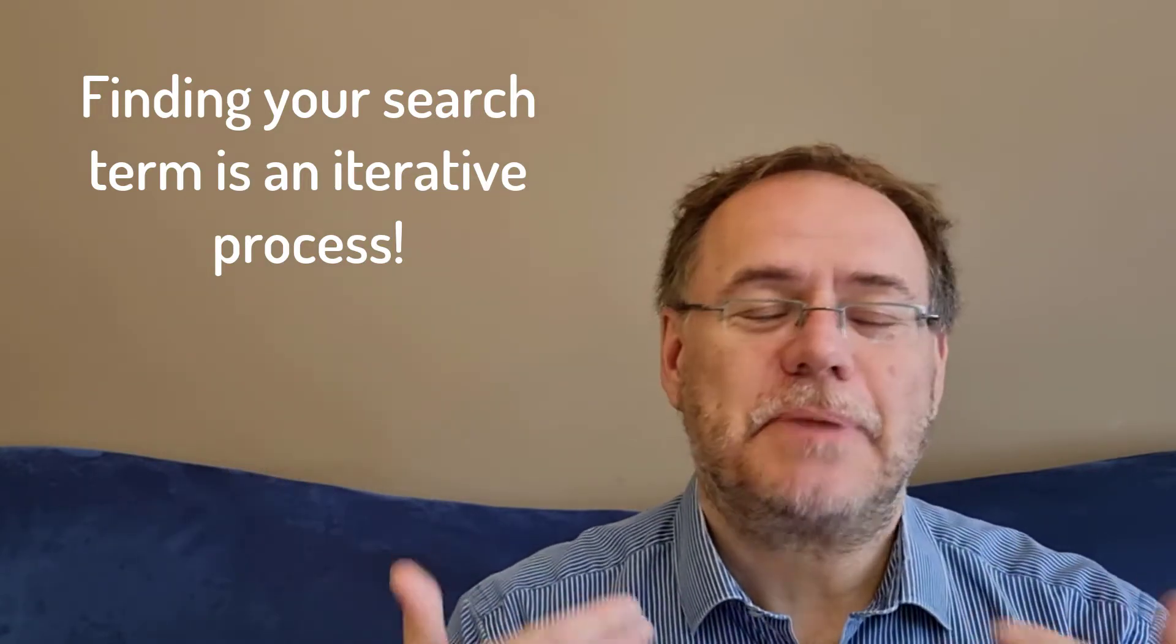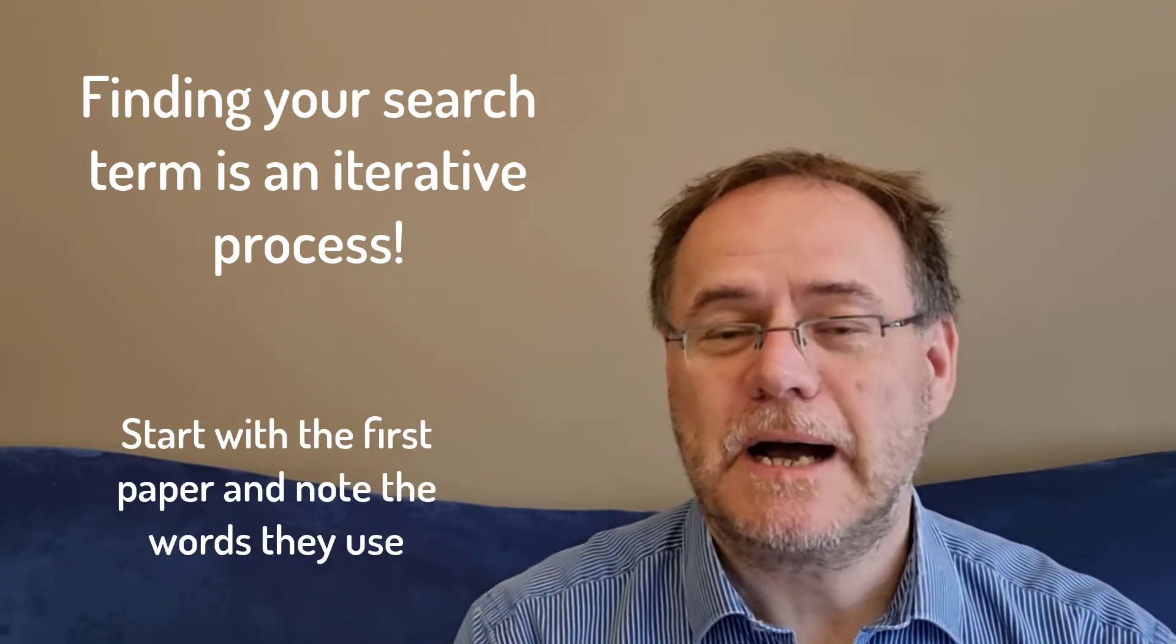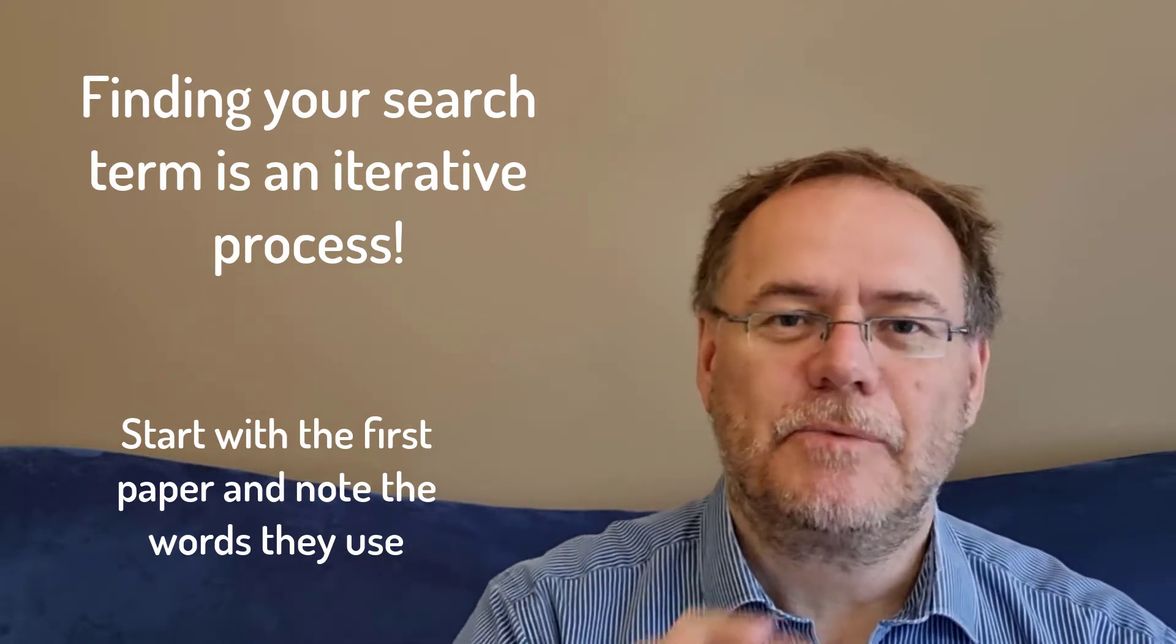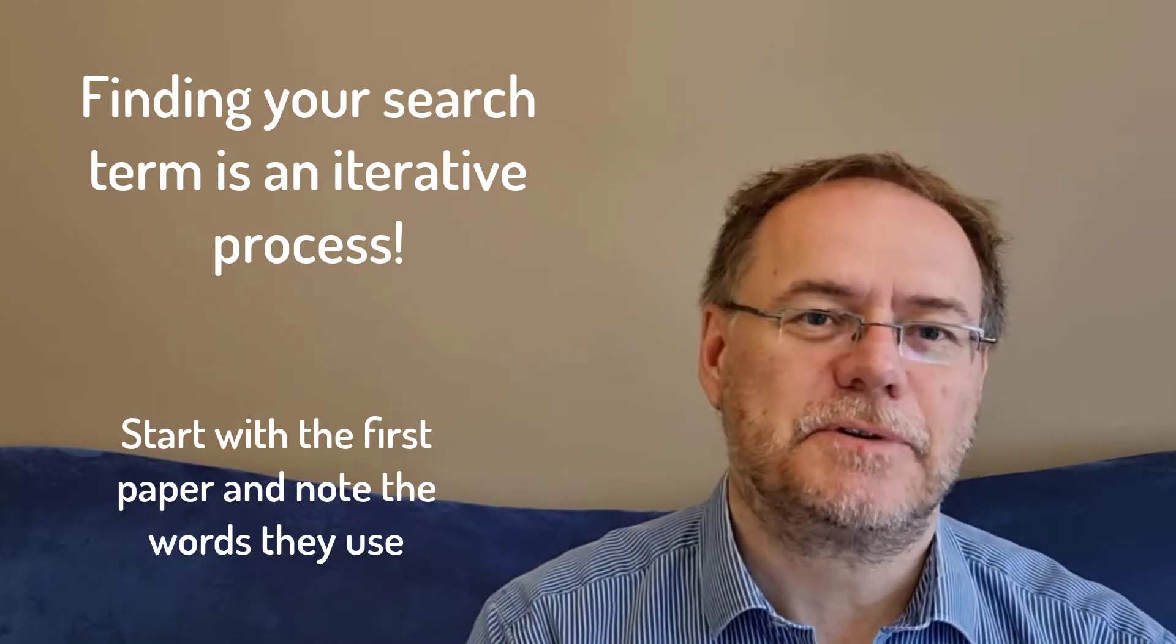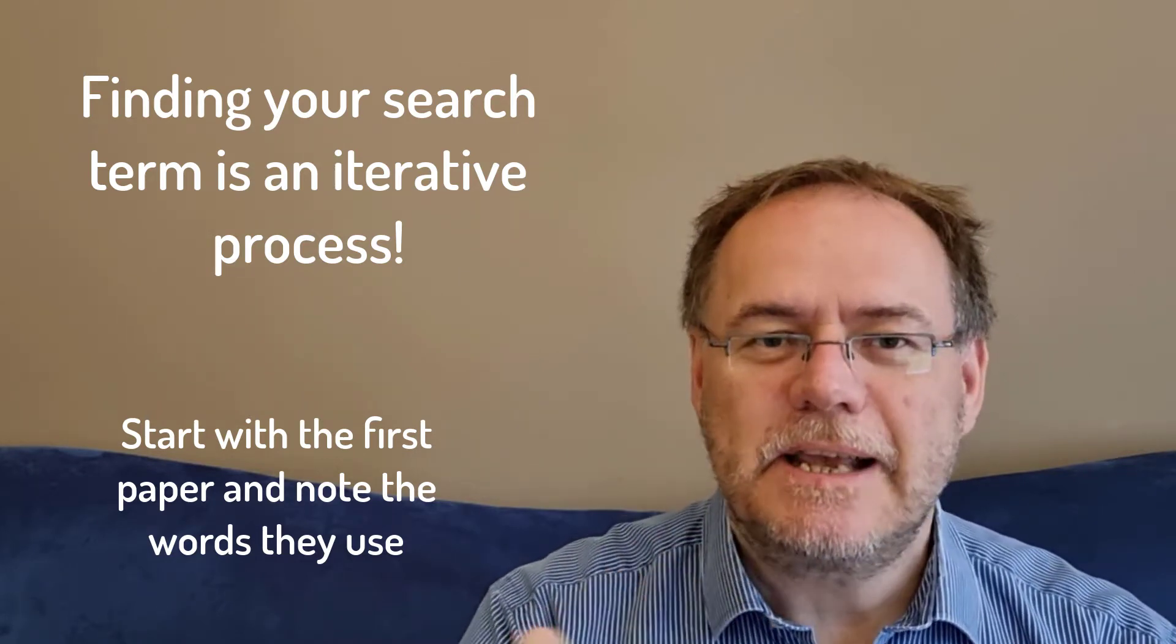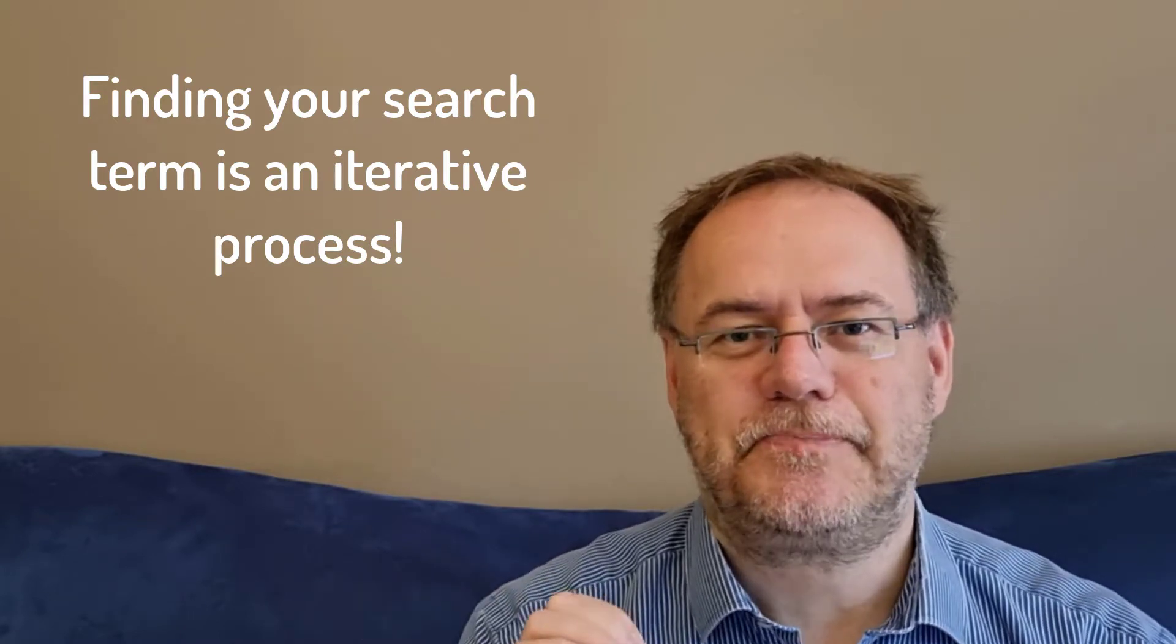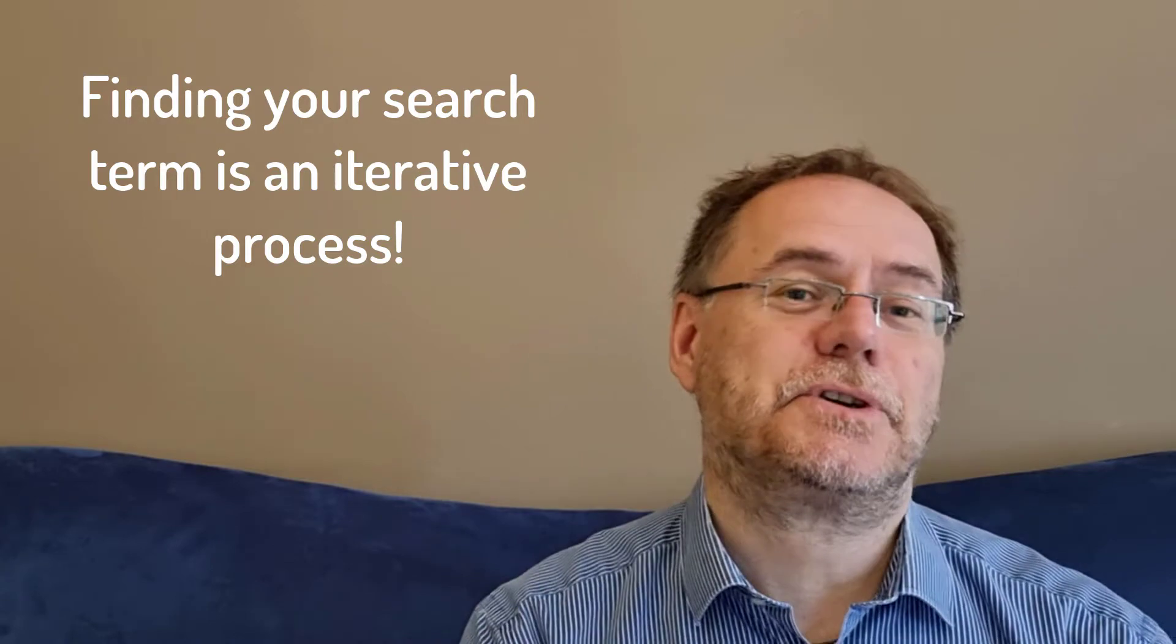So you start with a paper that you already found or with a keyword that you already have in mind, and you search for that or read that paper. And when you read that first couple of papers that are relevant for your topic, then write down all the words that they used to describe their research, and make that your first list and your first version of the search terms.